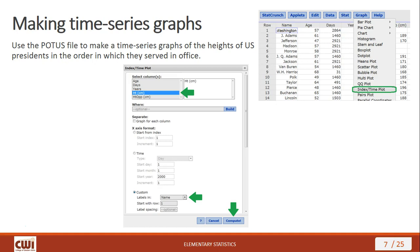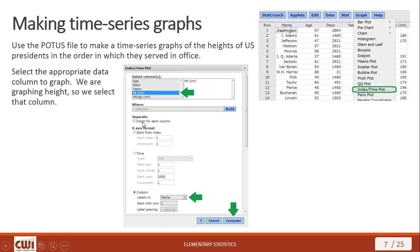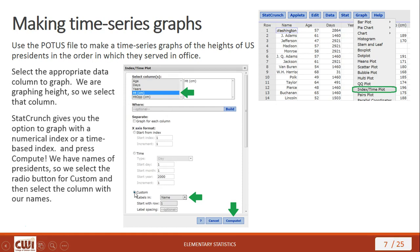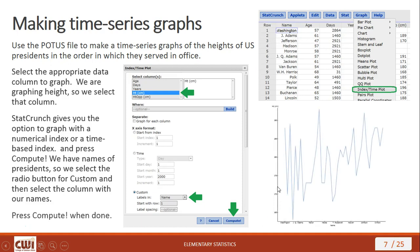Using the name column already assembled in order, we select Custom with the radio button, put the names in, start with the first row so Washington is first, and click Compute. Out comes a time series graph that jumps up and down as we elected taller and then shorter presidents. You can see president names at the bottom — Washington, John Quincy Adams, Zachary Taylor, and so forth.